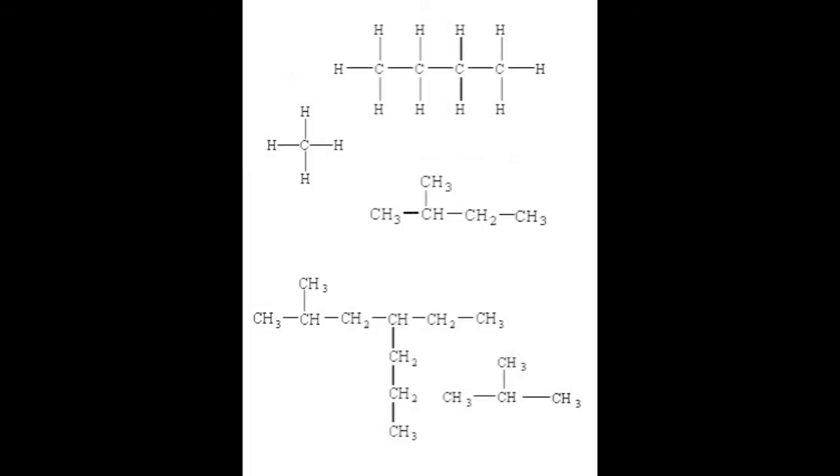Carbon is unique because it can form four covalent bonds, meaning it can share its electrons with four other atoms. Carbon is in group 14 (or group 4A), which means it has four valence electrons. Because of these four valence electrons, carbon can form short chains, long chains, branched chains, and rings.